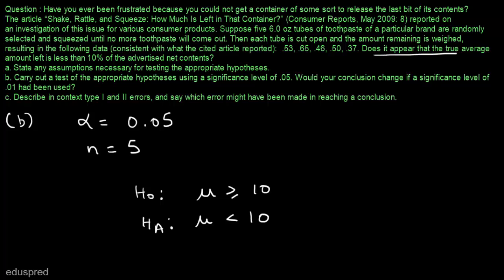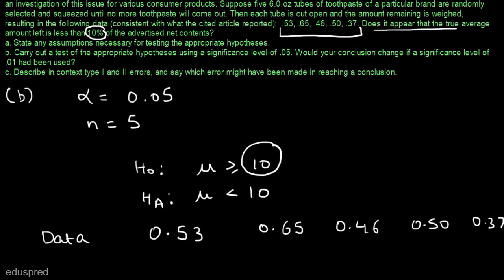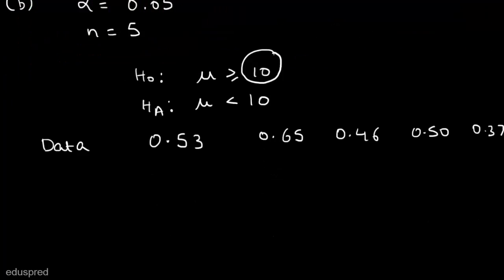Note that this is 10% — we are given a percent here. Before we test the hypothesis, we need to make a small change: the data is given in ounces, but the hypothesis is in percent. So let's convert the data to percentage terms. We have 0.53, 0.65, 0.46, 0.50, and 0.37. Since a tube has 6 ounces of toothpaste, to calculate the percent of toothpaste left we divide by 6 and multiply by 100. So 0.53 ÷ 6 × 100 = 8.83%.